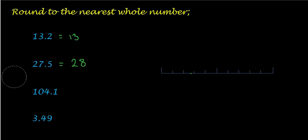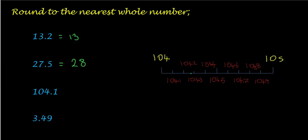Now 104.1—that's a large value, but exactly the same principle applies. I can put in some values from 104 to 105 and just mark in, as before, 104.1. I can see there that it is closer to the 104 end of the line.